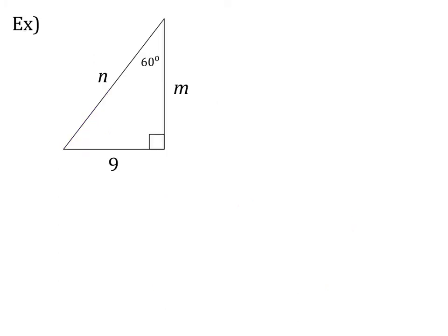Let's look at our first example. I see that I have a right angle and a 60-degree angle, so that means this angle must be my 30-degree angle. Anytime I find my 30-degree angle, I always circle it and draw an arrow to the opposite side, because I know that side is my x. My hypotenuse is 2x, and my leftover side is x√3.